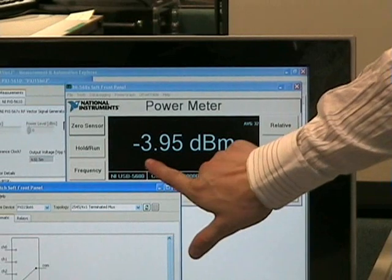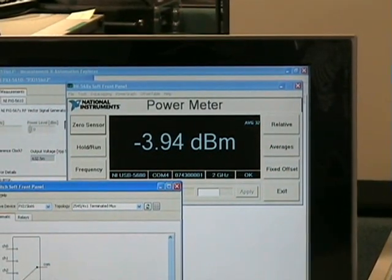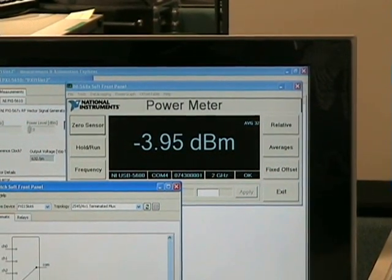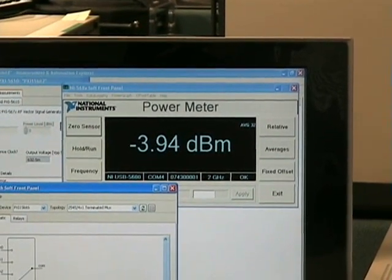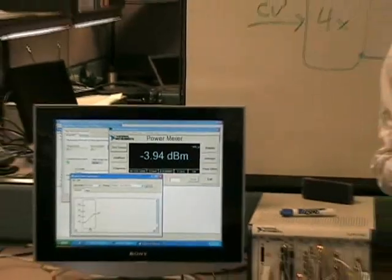But we should see it settle to about negative 3.94 dBm. What this tells us is that we see 0.8 dB more of insertion loss through a longer cable than we do through the small cable.